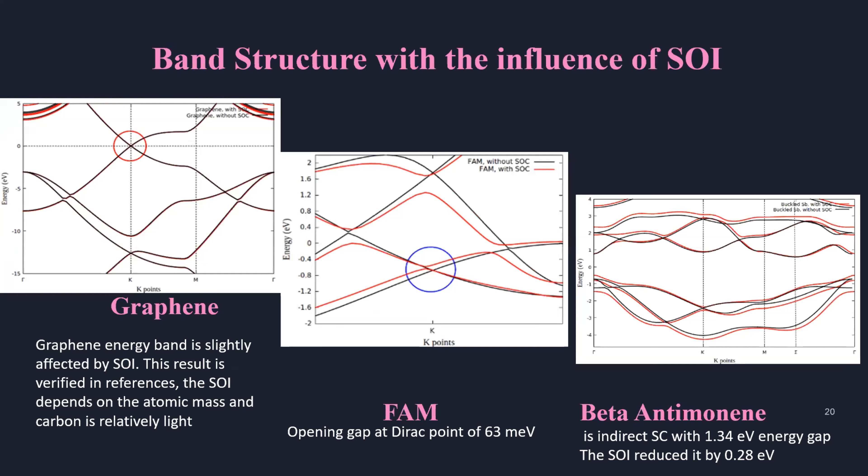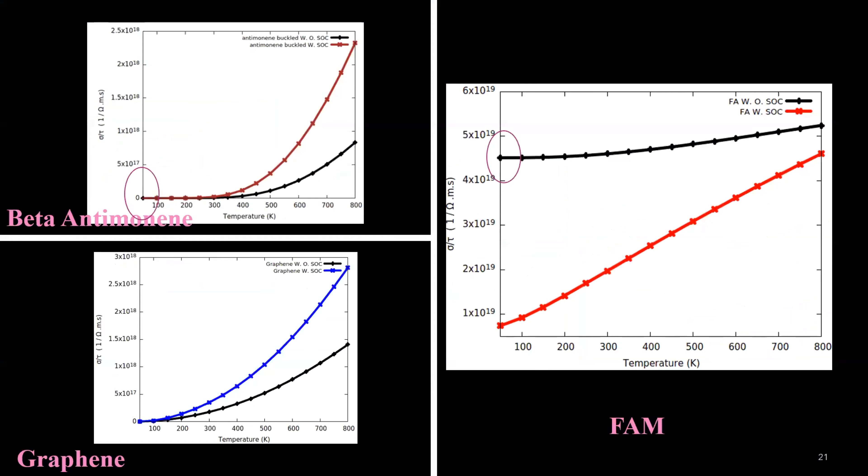The spin-orbit interaction is also taken into consideration. Band structure of antimony flat or buckled are more influenced by spin-orbit interaction than the graphene. However, the electrical conductivity is also influenced by spin-orbit interaction for low temperature in the case of flat antimony and for high temperature for graphene and buckled antimony.